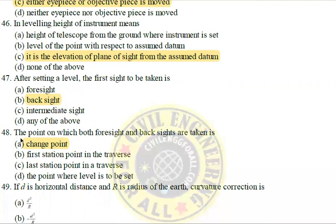Next: The point on which both foresight and backsight are taken is called the change point or turning point.